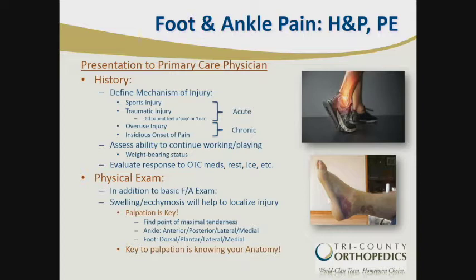When patients present to your office, you will take history and physical. A key part of the history is defining the mechanism of injury. Typically there are acute injuries and chronic injuries. Most of the acute injuries that we see are sports-related. They could be traumatic from falls, slips, that sort of thing. We'll ask if the patient felt a pop or a tear — that keys us into this being more of a traumatic type injury, a tendon tear, strain, etc., as opposed to chronic pain, which is more overuse or insidious onset from wear and tear. It's always important to assess the patient's ability to continue doing the tasks they were doing, their weight-bearing status, and whether they took any over-the-counter oral anti-inflammatories.